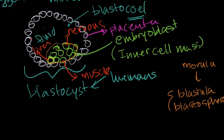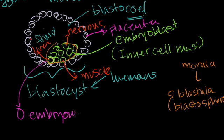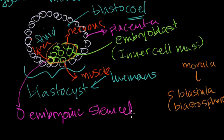So these are blastomeres. When I talk about embryonic stem cells, I'm talking about the individual blastomeres inside of this embryoblast, or inner cell mass. Each of these is an embryonic stem cell. The reason why these are interesting — and I think you already know — is that there's a huge debate around them. One reason is that these have the potential to turn into anything. They have what's called plasticity.